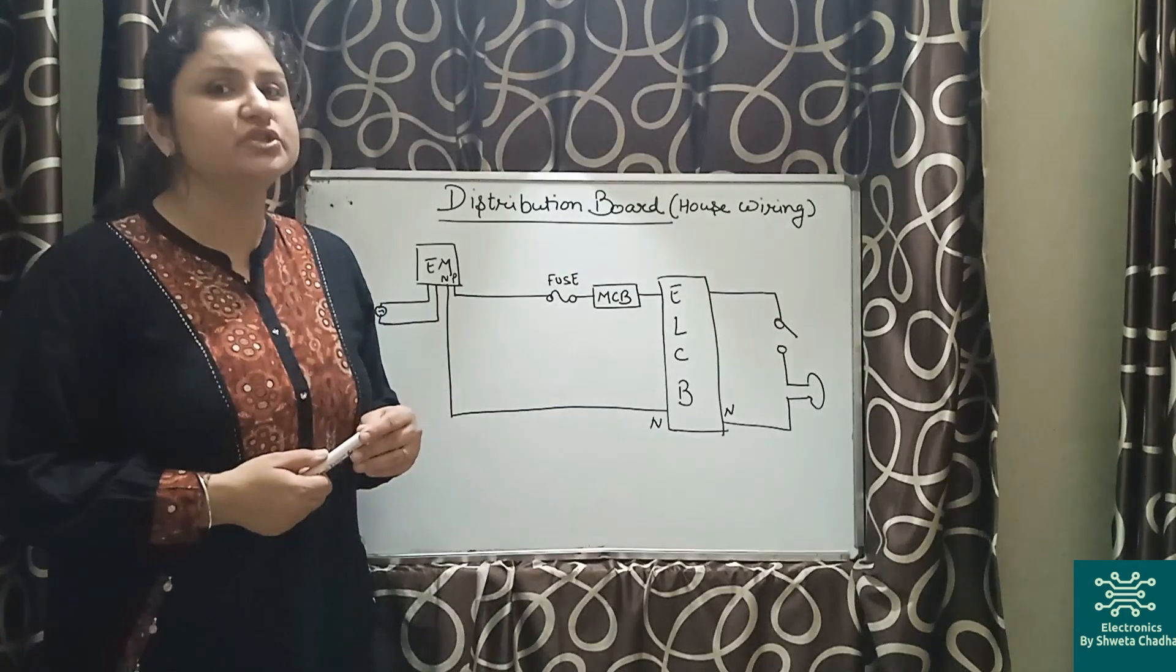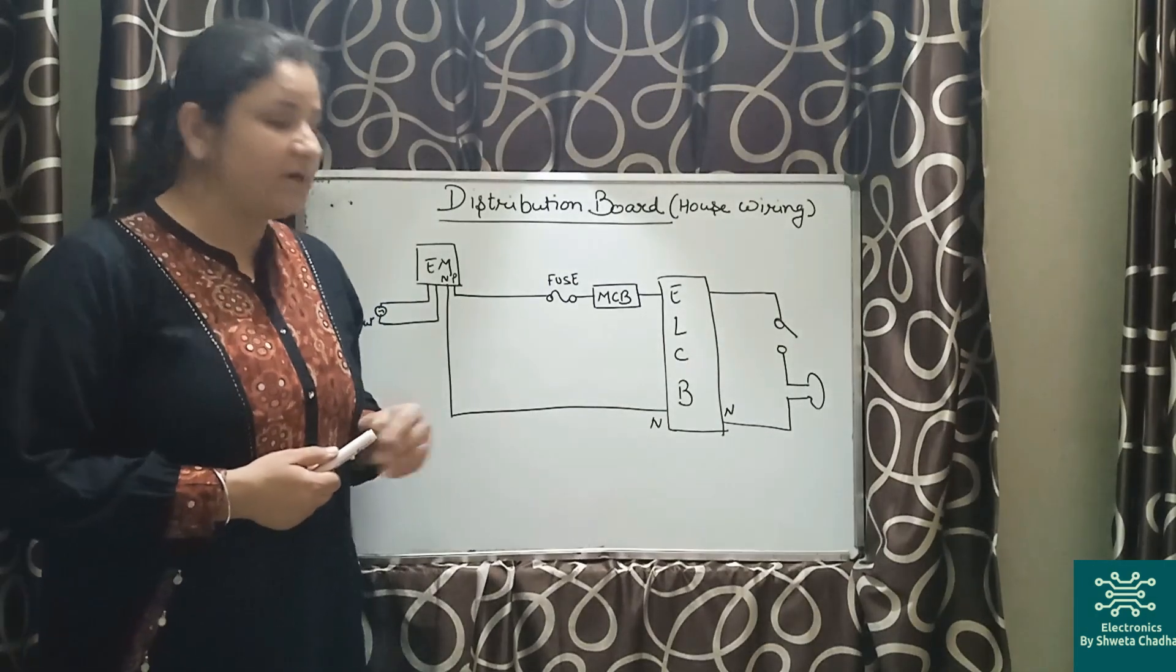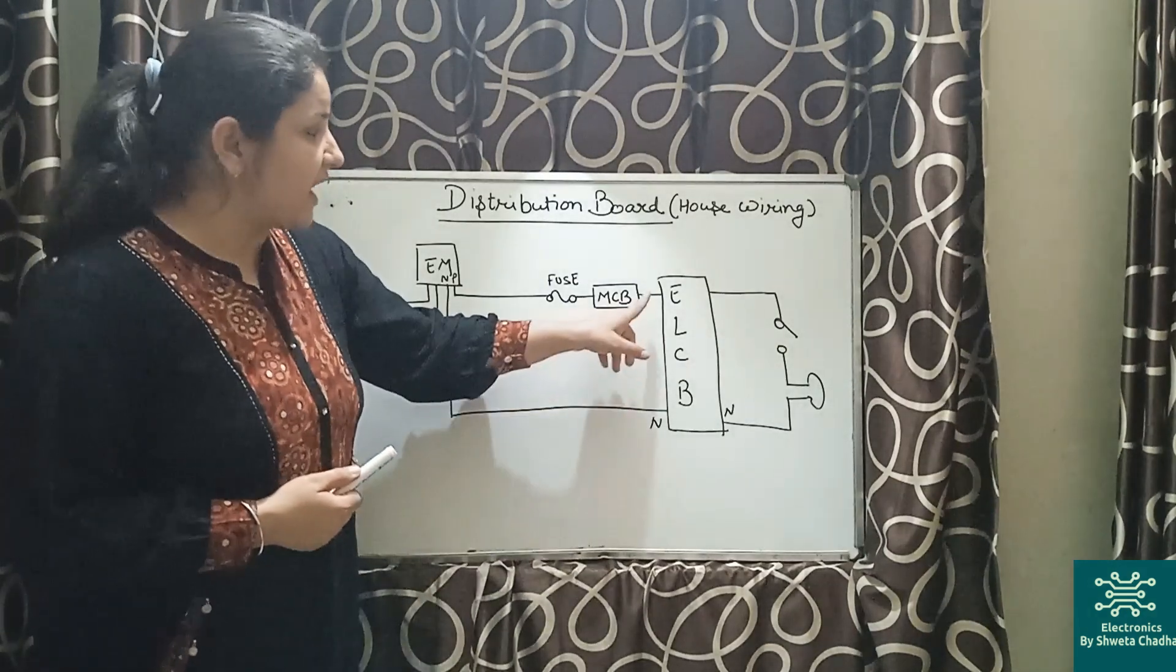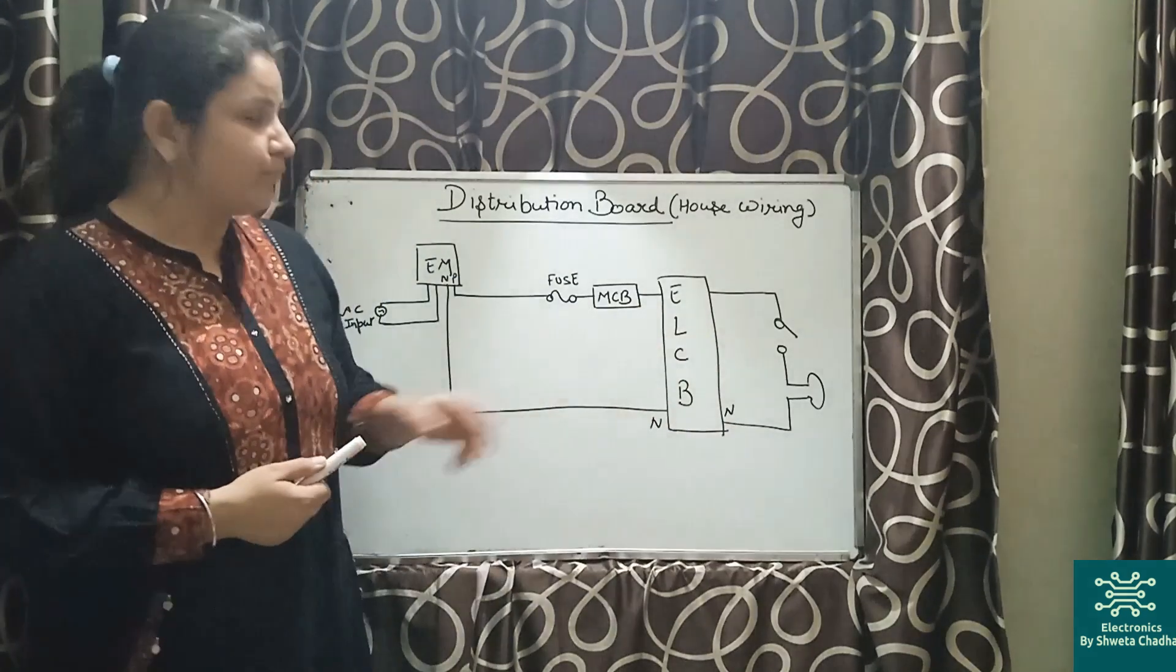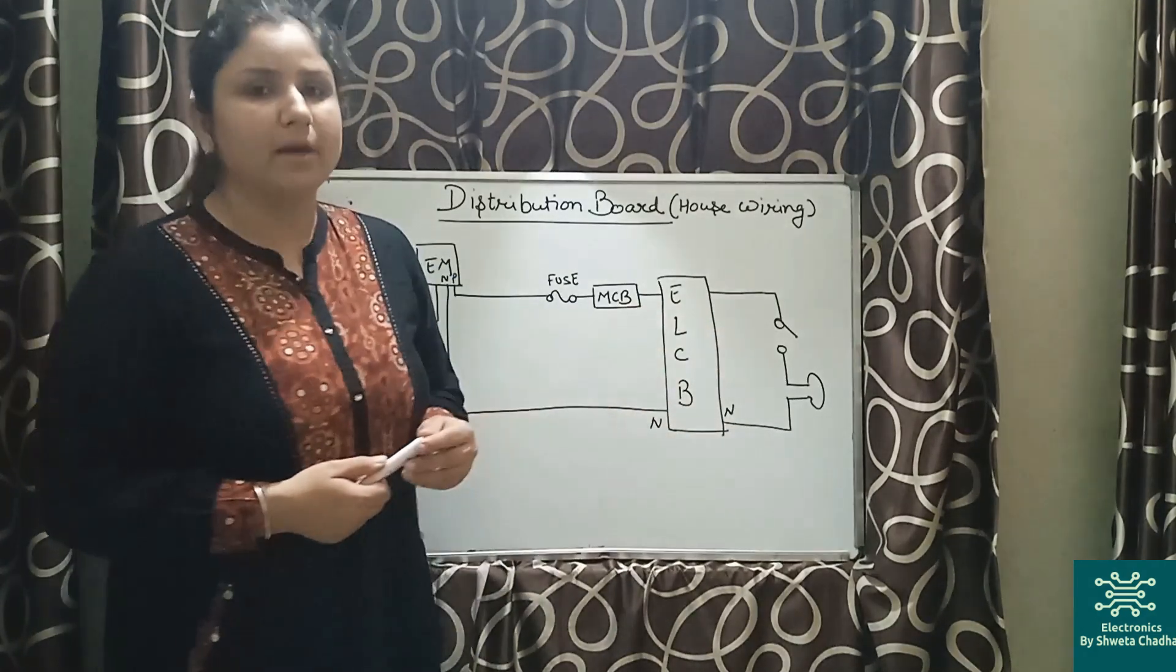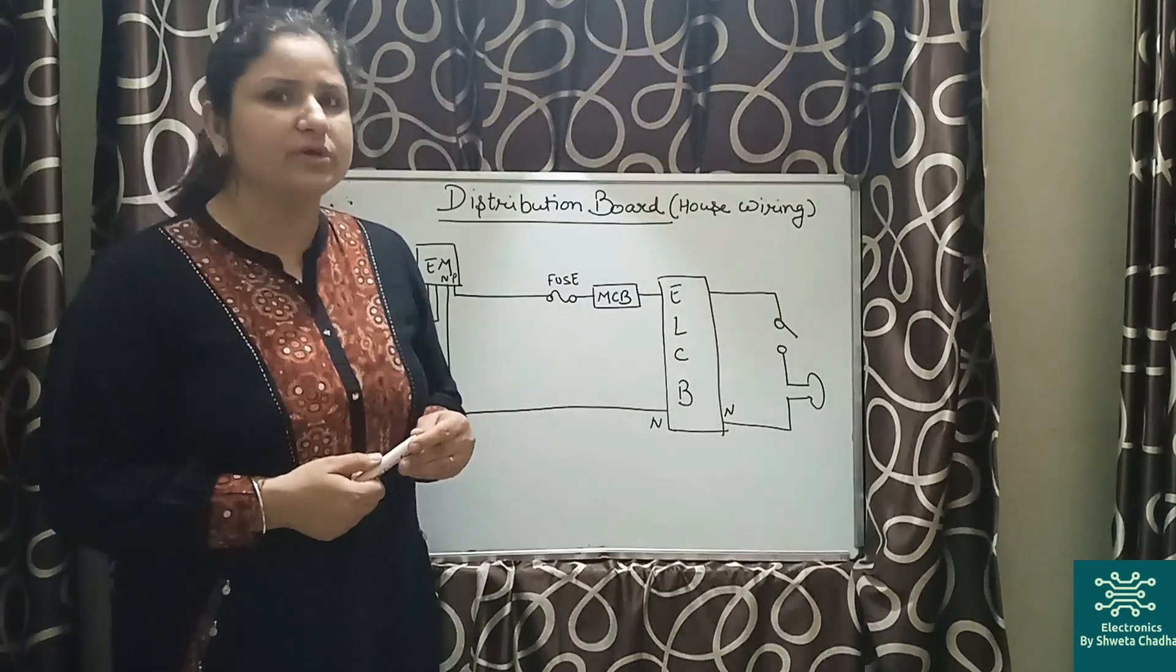ELCB, earth leakage circuit breaker. In the case of ELCB, we have total 1, 2, 3, and 4 terminals. So the terminals where numbers are mentioned, generally 1, 2 is mentioned, those will be treated as your phase wire connections.